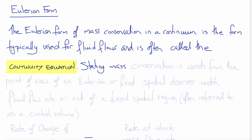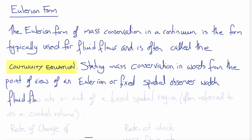Stating mass conservation in words from the point of view of a fixed Eulerian spatial observer watching fluid flow into and out of a fixed spatial region, which is often referred to in fluid mechanics as a control volume, we can write the following.